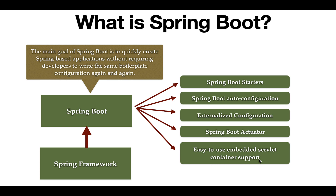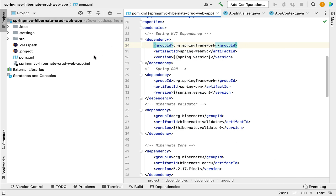The next feature is easy-to-use embedded servlet container support. Traditionally, to deploy a web application you would build a WAR file and deploy it to an external server like Tomcat. But with Spring Boot you can create a JAR file from your Spring application and deploy it in an embedded servlet container. For example, in IntelliJ IDEA I have a Spring MVC Hibernate CRUD web application built using the Spring Framework.